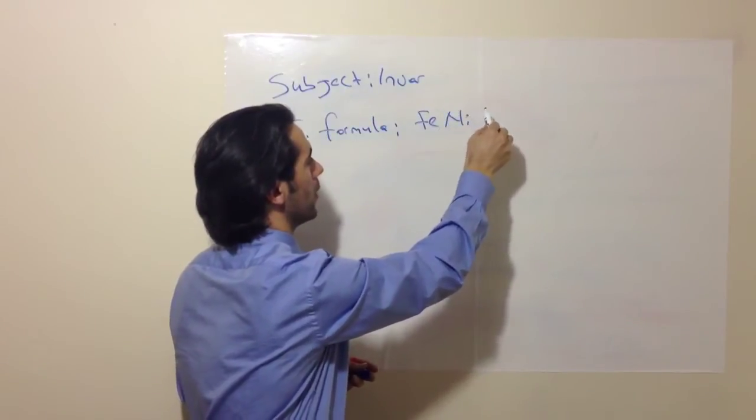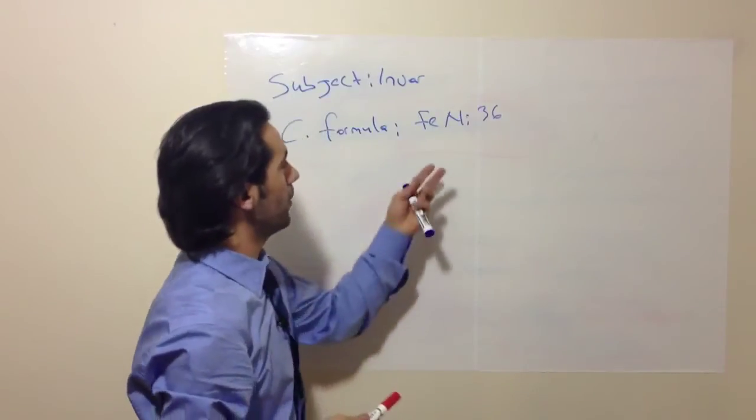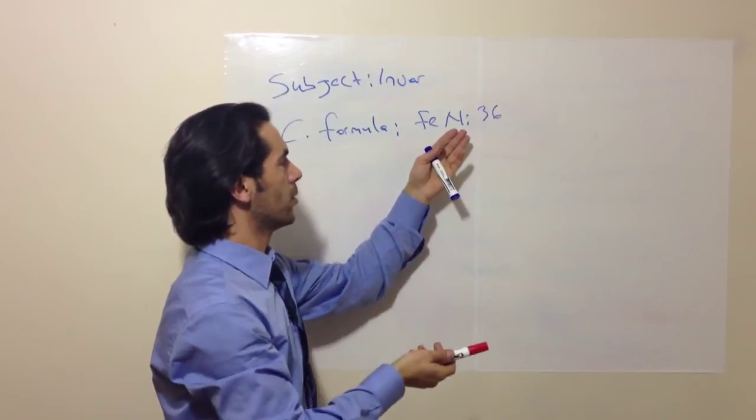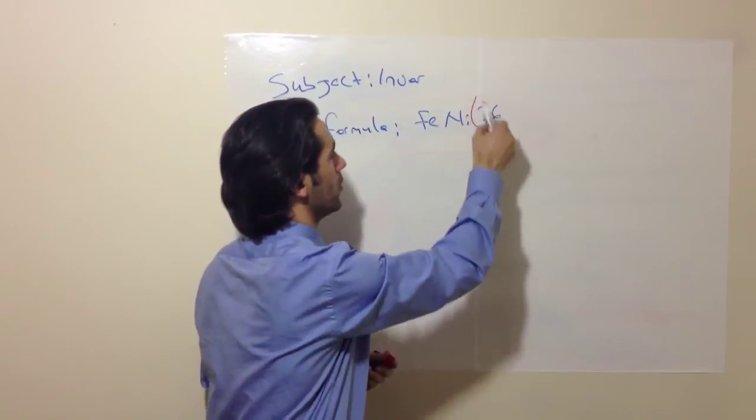Our special number is 36. 36 here represents the amount of nickel in Invar alloy. So as you see it is very high.